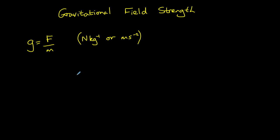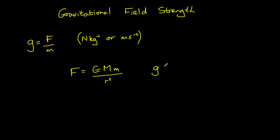If g equals F divided by m, we can apply this to Newton's law of gravitation introduced in the previous video. So F, the force, is equal to big G, the universal gravitational constant, multiplied by the large mass, multiplied by the smaller mass — in this case the test mass that we're dividing by — divided by the square of the separation between those masses. If we divide through by little m, the test mass, we get g equals big G times M divided by R squared, where M is the mass of the body whose gravitational field we are interested in.